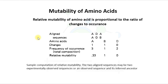Mutability of amino acids: the probability that each amino acid will change in a given small evolutionary interval is called relative mutability. For calculating relative mutability of amino acids, we simply count the number of times that each amino acid has changed in an interval and the number of times it has occurred in the sequences and thus has been subject to mutation. Relative mutability of amino acids is proportional to the ratio of changes to occurrence.